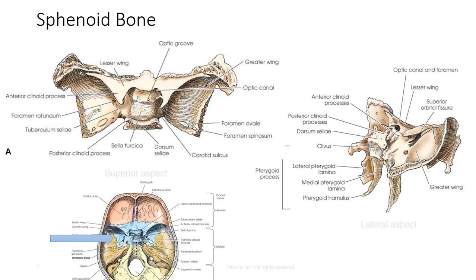The body contains two sphenoid sinuses and forms the posterior bony wall of the nasal cavity. The sella turcica is a saddle-like deep depression on the superior surface of the body, which houses the pituitary gland.